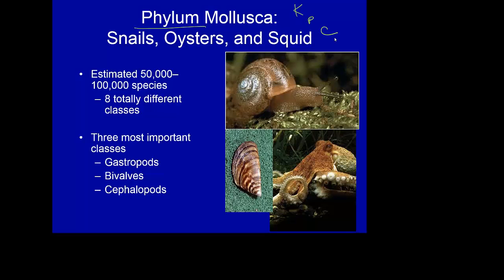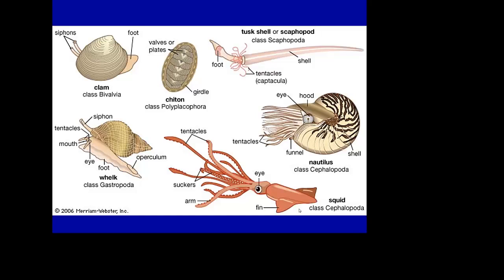I want to focus on three important classes of mollusks, and I think these will be the ones that you're most familiar with: the gastropods, or the snails; the bivalves; and the cephalopods. When we look at these different organisms, they really are completely bizarre in their structures — clam, squid, and so on.